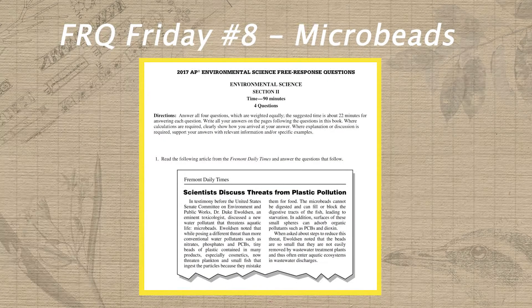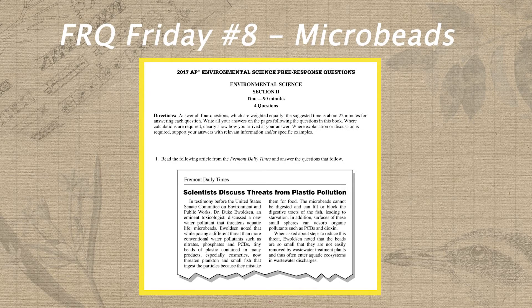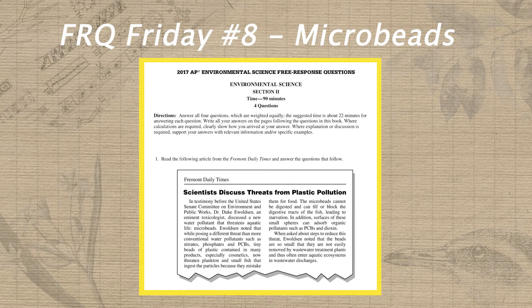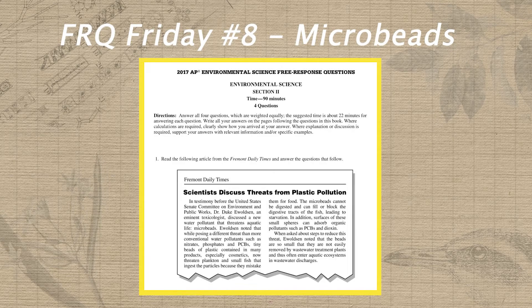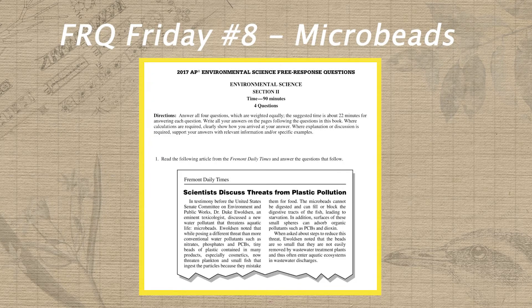Now that we've scored our practice FRQ for unit seven, let's take a look ahead at our practice FRQ for unit eight. Since this is a released question from before the course and exam redesign in 2019, this FRQ is from the previous exam format where question number one always paid homage to this fictitious town of Fremont, often in the form of a newspaper clipping such as this. I'm not gonna read the newspaper clipping to you, but you can pause the video now and read it, and then move on to see the annotation process for the questions.